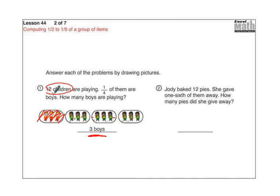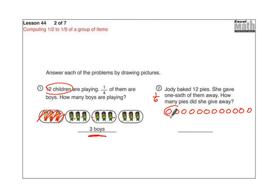Let's try number two together. Jody baked 12 pies. She gave 1 sixth of them away. So let's draw the 12 pies first. Do that on your paper — if I'm going too fast for you, just pause the video. And then she gave 1 sixth of them away, so that means we have to divide these into six parts.